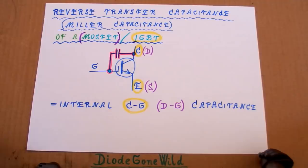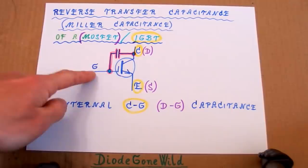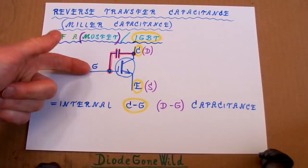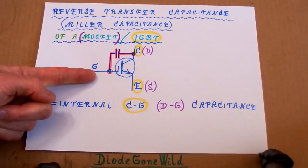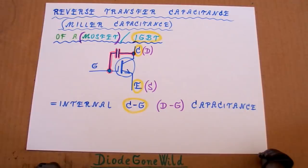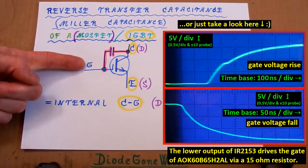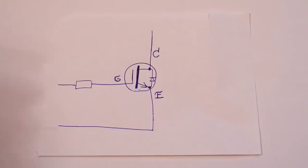It's basically an internal capacitance of a MOSFET or IGBT transistor from its drain to its gate, or from its collector to its gate in case of an IGBT transistor. Without explaining this, it's not possible to explain the gate waveforms you are going to see in future measurements. The previous gate waveform measurements were done without loading the collector, but the later measurements will be done with the collector loaded, so the gate waveforms will be influenced by this capacitance.